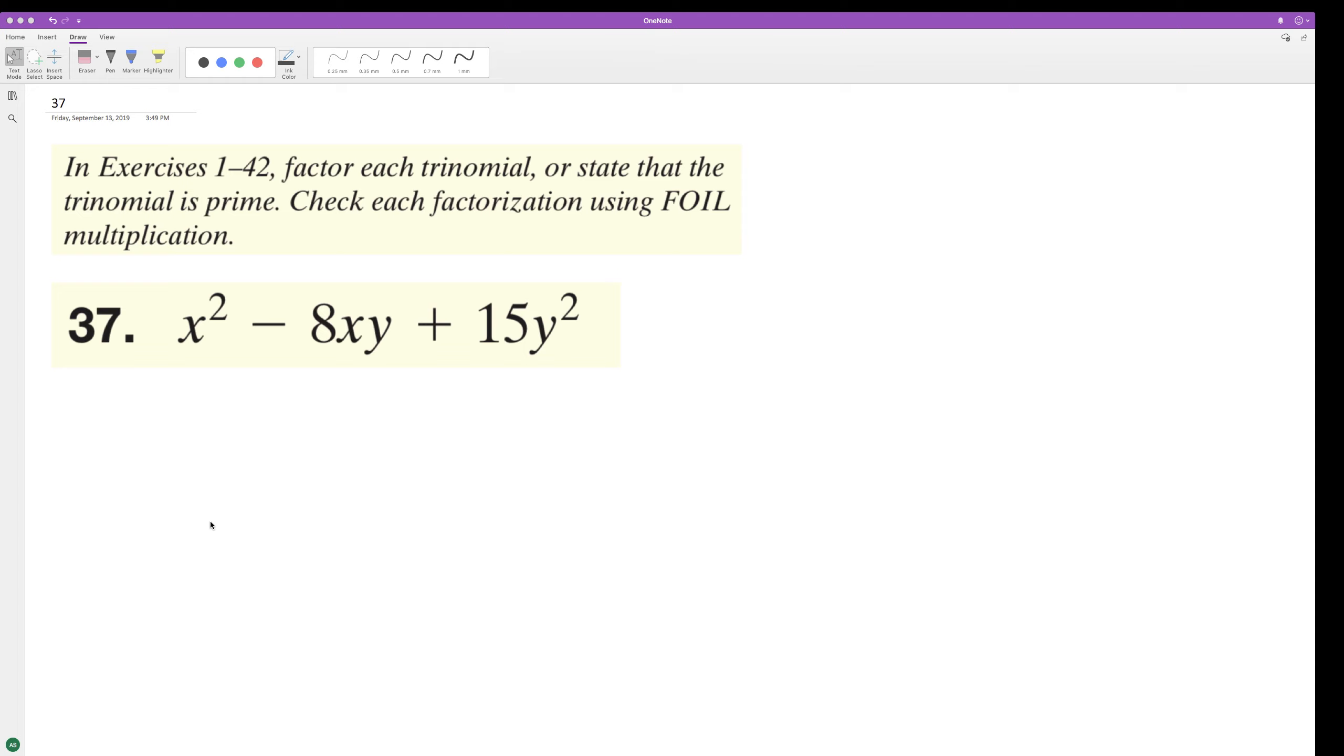Factor the following trinomial and then FOIL it again, that way we make sure it's correct. We need two values that when added together equal negative 8, but when multiplied equal positive 15. So it looks like it's going to be negative 3 times negative 5.